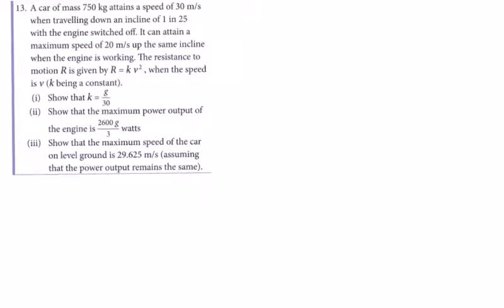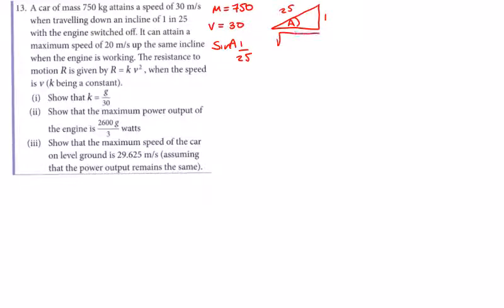Question 13: a car of mass 750 kilograms attains a speed of 30 m/s travelling down an incline of 1 in 25, so sine a equals 1/25. We also need cos a: using Pythagoras, that's the square root of 25 squared minus 1 squared, which is root 624 over 25.